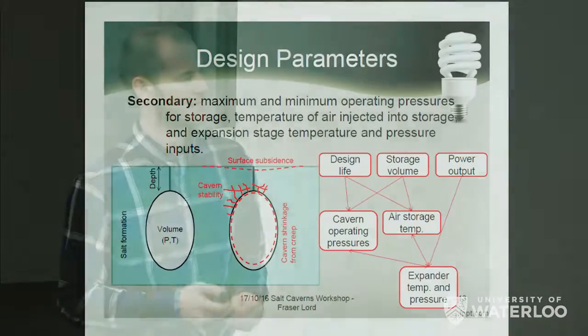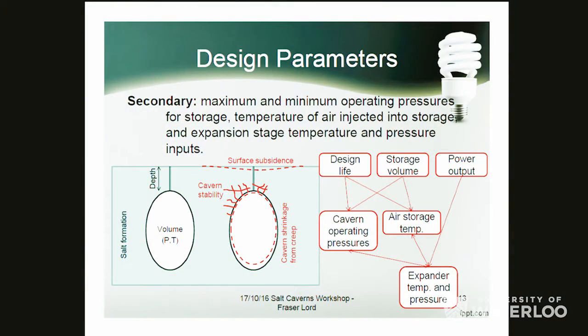Following from the primary design parameters, I selected secondary design parameters most critical to project success — generally in terms of achieving your power output, which is governed mostly by expander temperature and pressure inputs, within the limitations of both the turbomachinery and the cavern's operating ability. To avoid risks such as cavern stability, ground surface subsidence, and excessive cavern volume loss from creep, you need to carefully consider your operating pressures and temperatures.